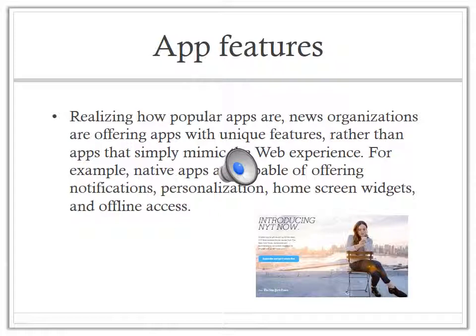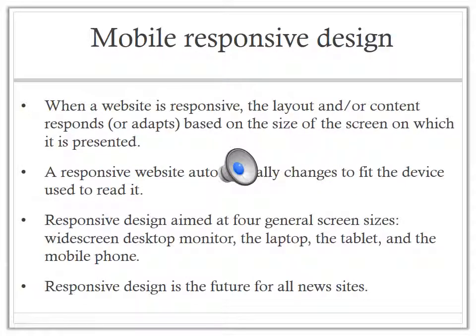Native apps are capable of offering notifications that you predetermine based on the kinds of stories you want to hear about immediately. There's personalization, so when you open the app it'll go straight to the kinds of content that you've identified as most interesting to you — maybe international news or music. There are also home screen widgets that allow you to open the app very easily with just one click.